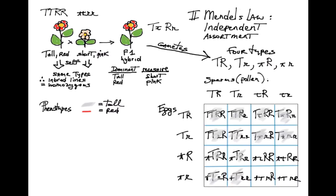Note that, if you look at the whole square, about three quarters of the zygotes are tall.